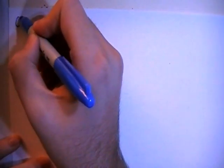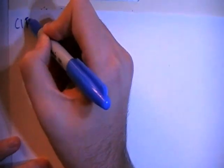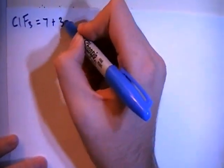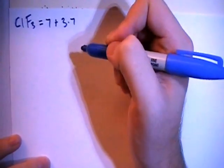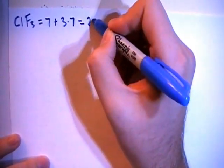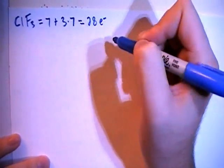This is going to be ClF3, and that is going to give us 7 valence electrons from the chlorine plus 3 fluorines each with their own 7 valence electrons for a total of 28 valence electrons.